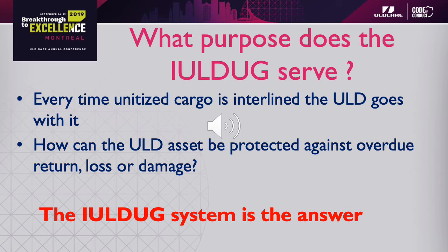So what purpose does the IULD UG serve? Well, every time unitized cargo is interlined, the ULD goes with it. And then how is the owner of that ULD able to protect his ULD asset against overdue return, loss, or damage? The IULD UG system is, and I would argue, the most efficient way to manage this situation.